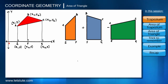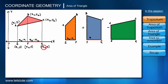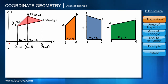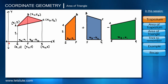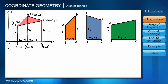Let's start finding the lengths required to compute the areas. Length EF is x2 minus x1. Length FG is x3 minus x2. And length EG is x3 minus x1. Now for the vertical lengths: length AE is y1 minus 0, that is y1; length BF is y2 minus 0, that is y2; and length CG is y3 minus 0, that is y3.